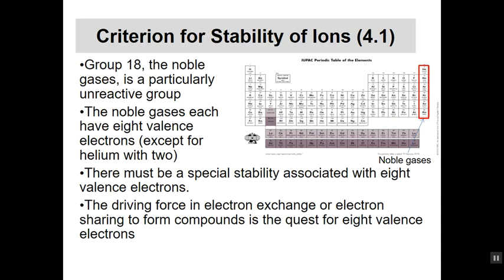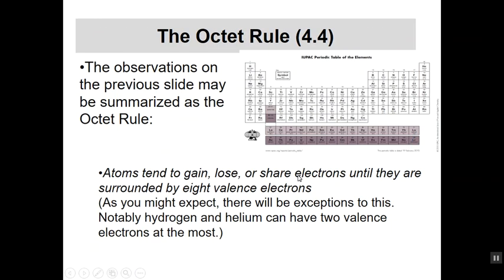The driving force we have in electron exchange or electron sharing to form compounds is the quest to have eight valence electrons. Here we're focusing on ionic compounds, ones where we actually transfer electrons back and forth. We're really talking about metals, which are on the left-hand side of the chart, combining with non-metals. The next section talks about when non-metals and non-metals get together.